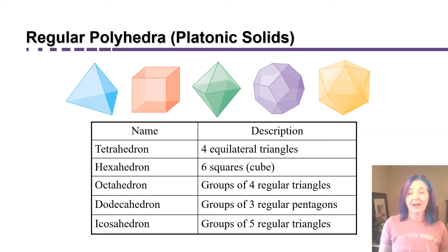There are only five platonic solids: the tetrahedron, which looks like a little pyramid, the hexahedron, which is a cube made of six squares, the octahedron, the decahedron, and the icosahedron.